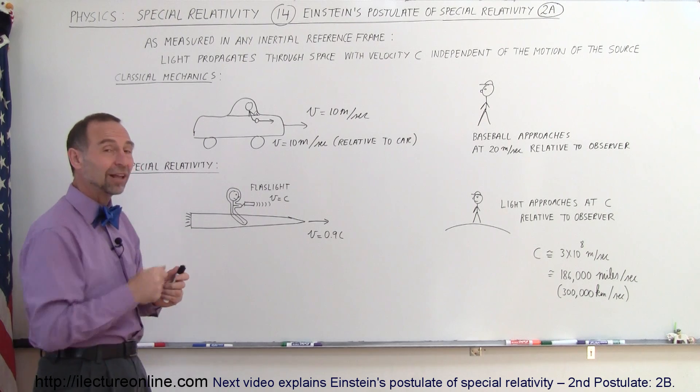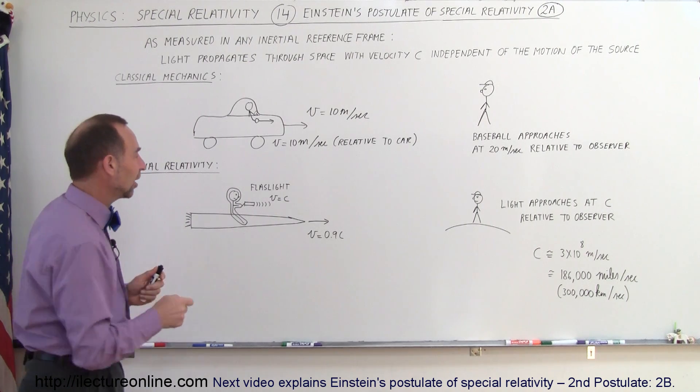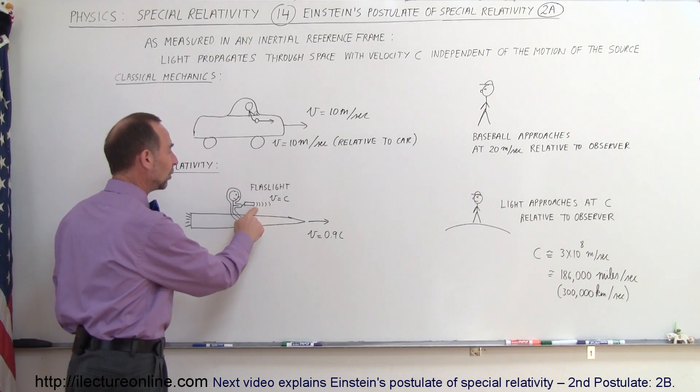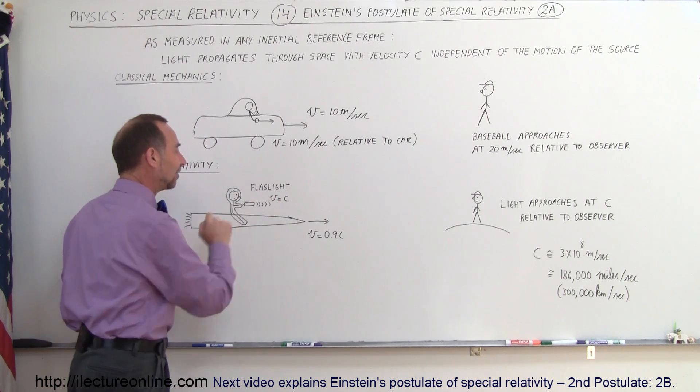He has a flashlight with him, turns on the flashlight. So we know that the light will emanate from the flashlight at the speed of light, V equals C.